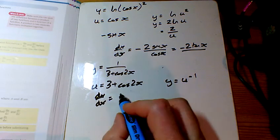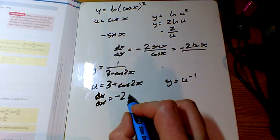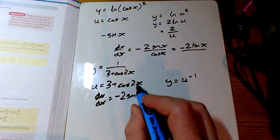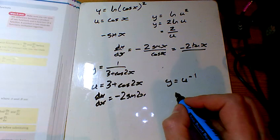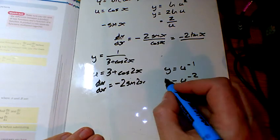So differentiating that, the 3 disappears, the cos goes to minus sine multiplied by that 2 as well. So we get minus u to the power of minus 2.